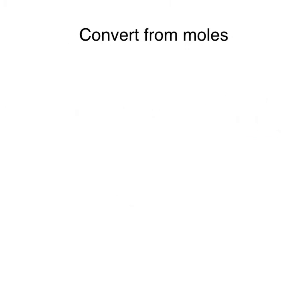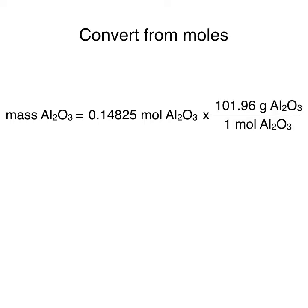Our last step is to convert from the moles of aluminum oxide to the mass of aluminum oxide, using its molar mass. We can write the mass of aluminum oxide is equal to the moles of aluminum oxide, which in this case is 0.14825, multiplied by its molar mass, which is 101.96 grams per mole.